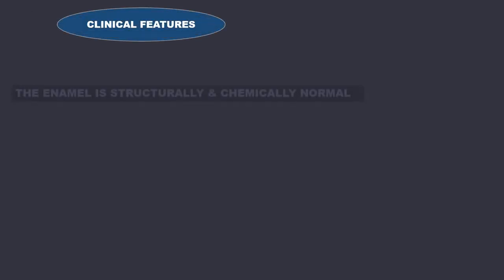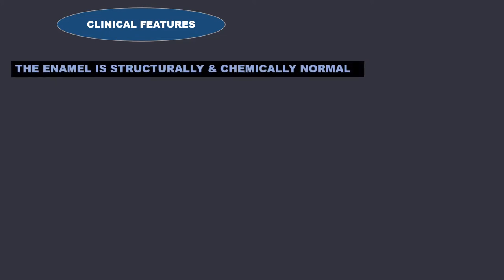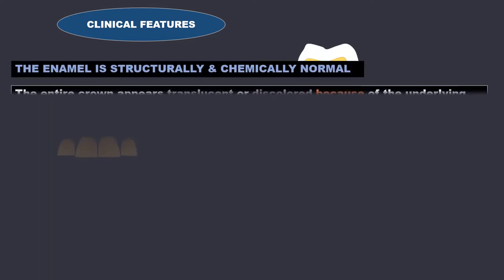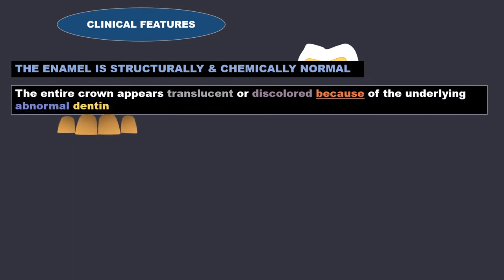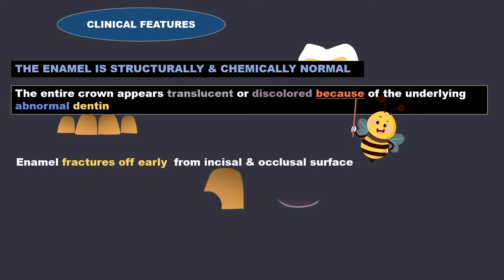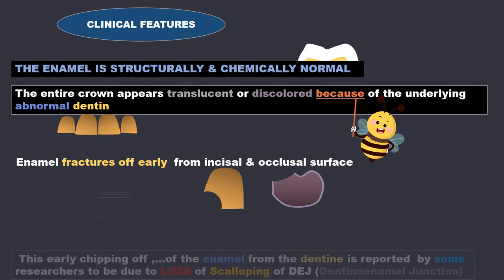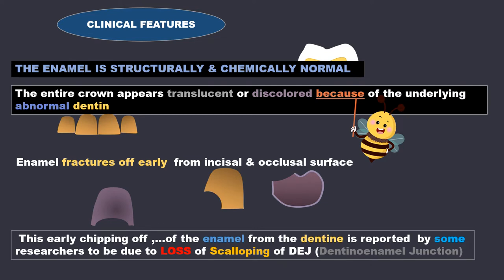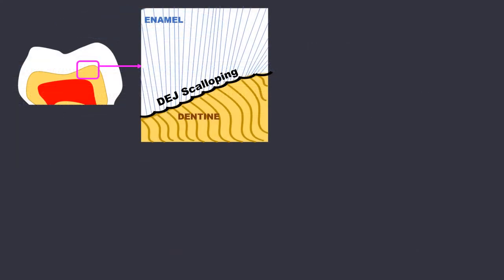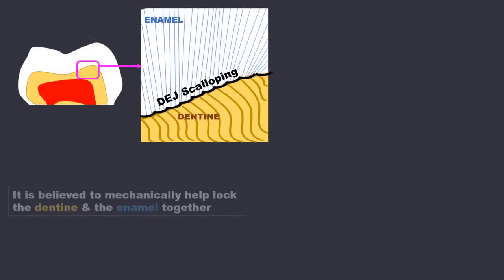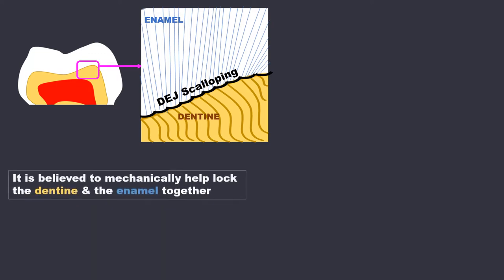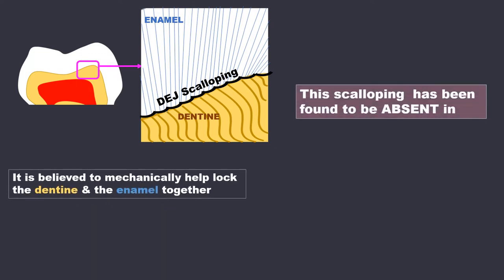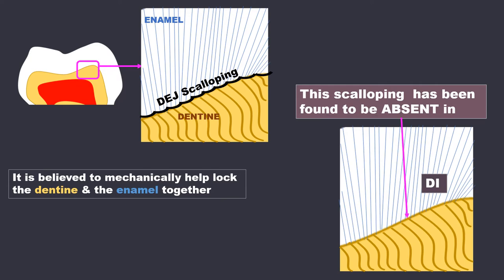When we look at the clinical presentation, the enamel is structurally and chemically normal, so it is technically normal. But the entire crown appears translucent or discoloured because of the underlying abnormal dentine. Enamel fractures off easily from the incisal or occlusal surfaces. This early chipping off of enamel from dentine is reported by some researchers to be due to loss of scalloping of the DEJ, which is believed to mechanically help interlock the dentine and enamel together. This scalloping has been found to be absent in DI.